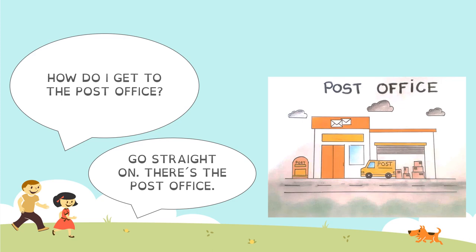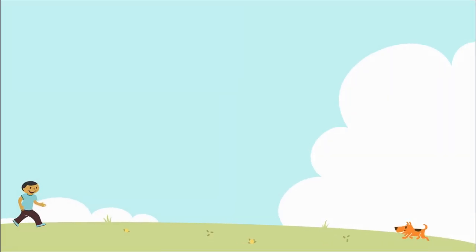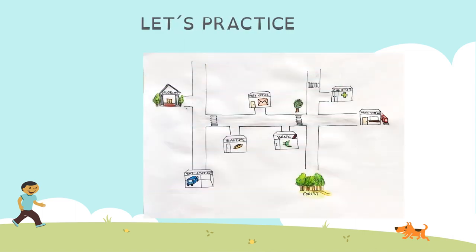So let's practice a little bit. Look at this picture. We have the museum, we have a bus station, bakers, post office, chemists, train station, forest.